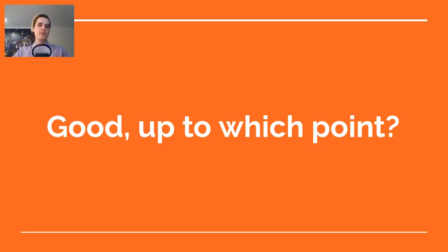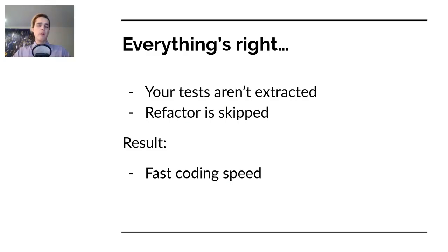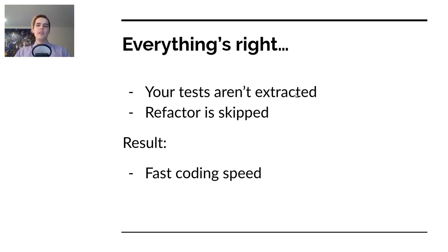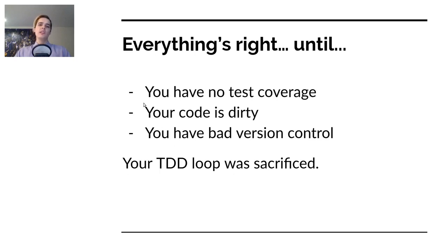Notebooks can make your life simpler and things faster — but up to which point? Everything's going to be fine when you code in notebooks until it ends up too messy. What happens is that your tests aren't extracted, you print things, you test things — you've almost made the test but you haven't taken it out of your notebook, and you've skipped your refactoring. Your code will end up dirty. It results in a fast coding speed, but you'll realize you have no test coverage, dirty code, and you've badly copy-pasted your notebook many times to version it. Your TDD loop was sacrificed and you end up with a mess.